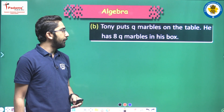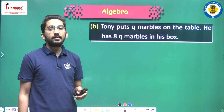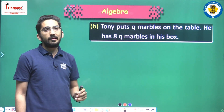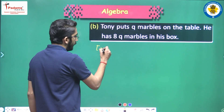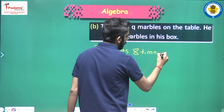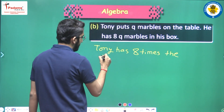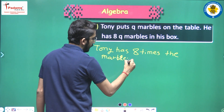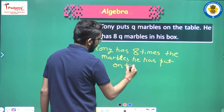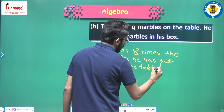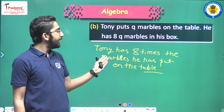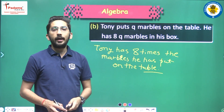Tony puts q marbles on the table and he has 8q marbles in his box. In ordinary language: Tony has 8 times the number of marbles in his box compared to what he put on the table.